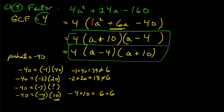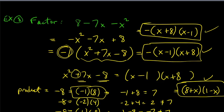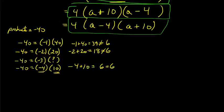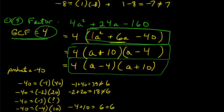The key point is we had to factor out the 4 first before using the trinomial technique. With that 4 in front, the method wouldn't work directly. Remember: always factor out the GCF first — that's always the first stage of factoring.